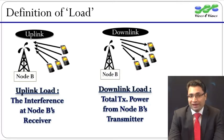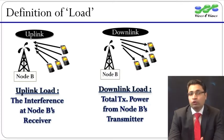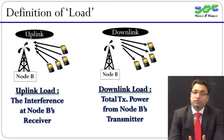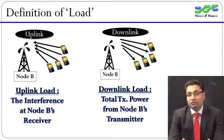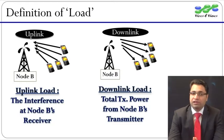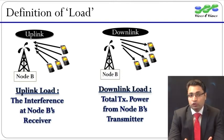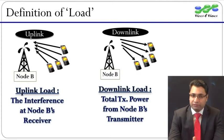From this discussion about power, it's clear that the UE and Node B should transmit as little power as possible, and as much power as required. In order to achieve this optimum power level, we have a very fast power control, which works both in uplink and in downlink, to control the transmit power of the UE and Node B respectively.